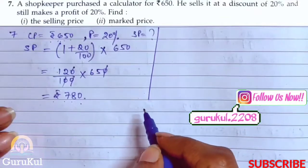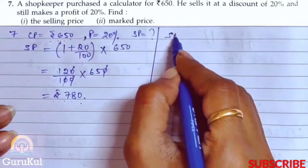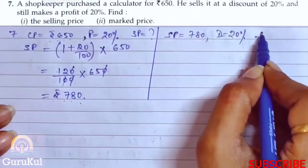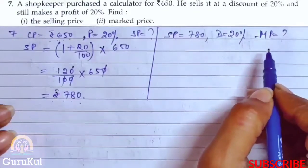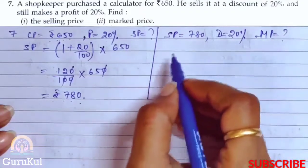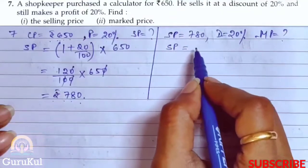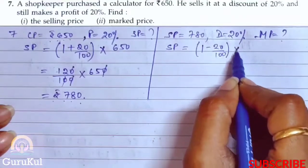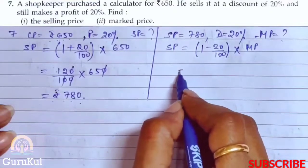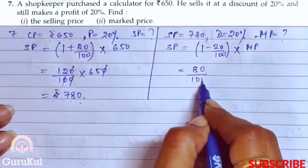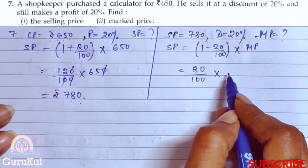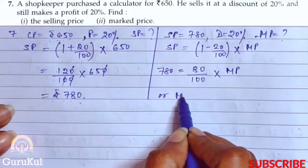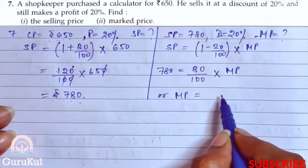Now the second part of question number 7, we need to find the mark price. So selling price is equal to 780. On this he gave a discount of 20%. So what will be the mark price? Selling price equals 1 minus 20% of marked price. So this becomes 80 by 100 into mark price, and SP is 780.